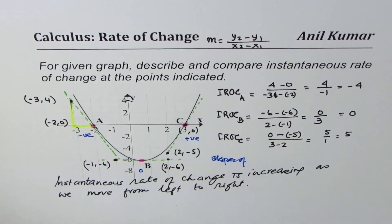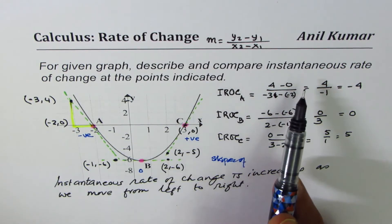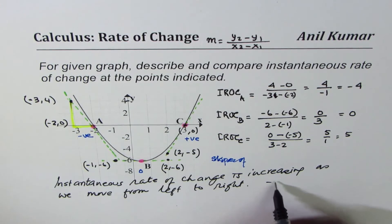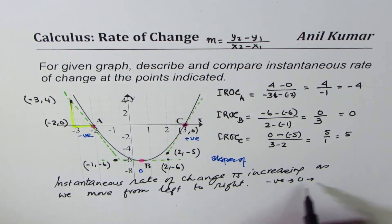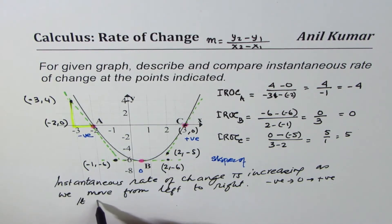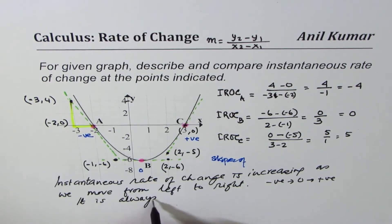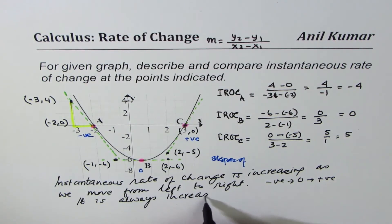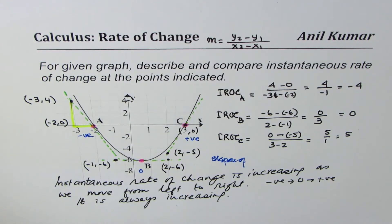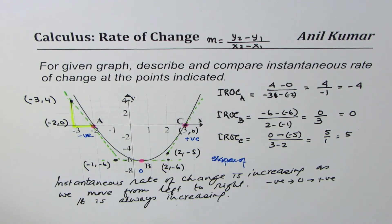Whenever you analyze a curve from left to right, you can observe that the instantaneous rate of change goes from negative to zero to positive — it is always increasing. You'll also notice that whenever the slope is zero, it marks a turning point on the graph. I'm Anil Kumar, and I hope that helps. Feel free to write your comments and share my videos. Thank you and all the best.